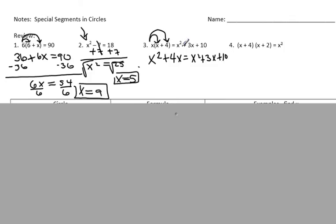I'm trying to isolate my x, so I'm going to move all my x squareds to one side. I'll subtract x squared from both sides. x squared minus x squared is zero on both sides. So I'm left with 4x equals 3x plus 10. I would subtract 3x from both sides, so I get x is 10.